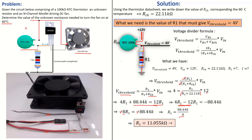So R1 = 88.44 kΩ / 8 = 11.055 kilo-ohms. This means that replacing R1 — the resistance across the gate and source (the gate pin and source pin, with the metal pin being the drain) — with 11.055 kΩ in the circuit will turn this fan on at exactly 60 degrees.